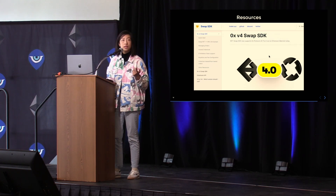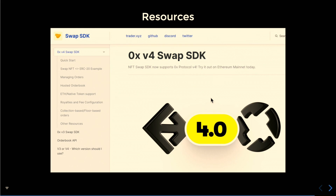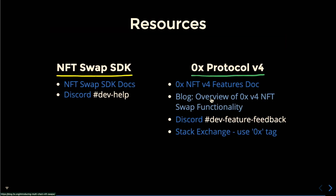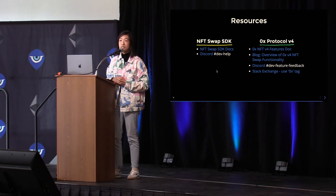For resources, I highly recommend checking out the NFT Swap SDK documentation — they cover in detail all the examples I've shown in this presentation. On the left-hand side is the NFT swap information, with a QR code available for these links. Their Discord dev team is very proactive if you have questions about implementing. For 0x, we have NFT docs as well as documentation about the rest of our protocol, a blog overviewing NFT swap functionality, a Discord, and for technical questions, I recommend Stack Exchange using the 0x tag — our team is very proactive there.